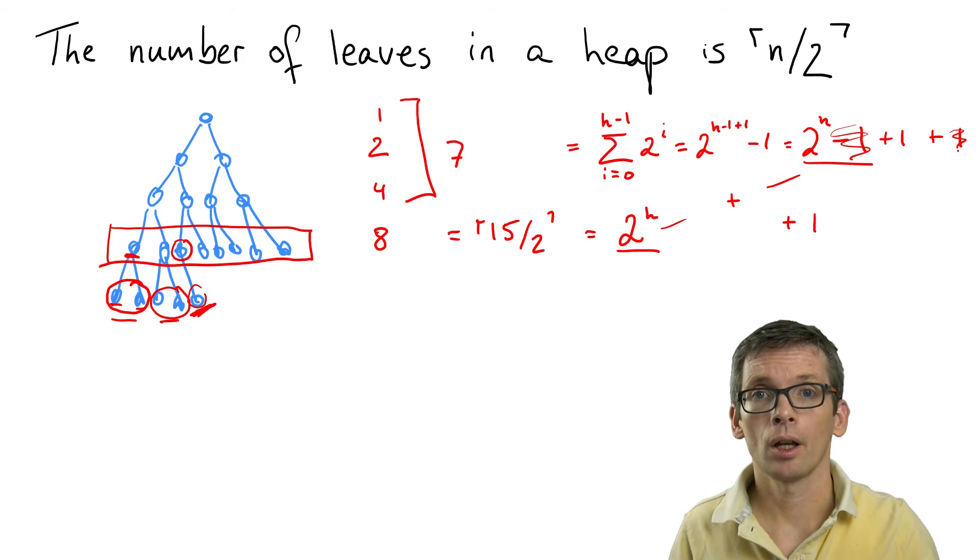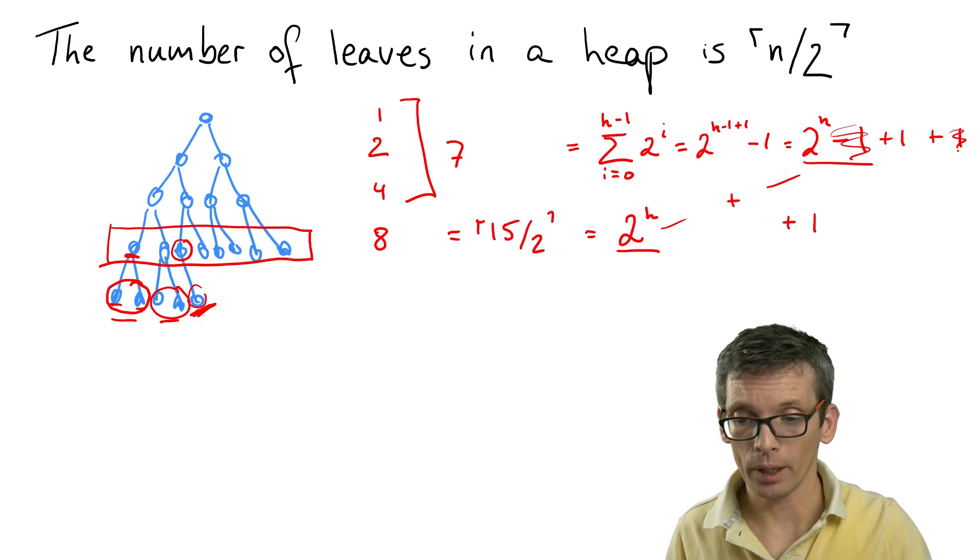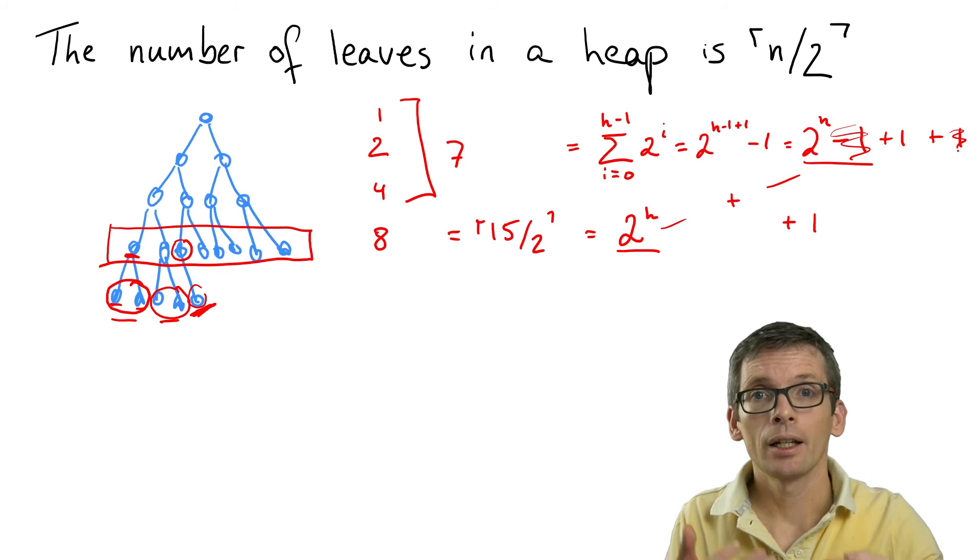This already is a complete argument, but there is also a different way of seeing this, and that is the following. So what we actually only use here is that a complete binary tree is a